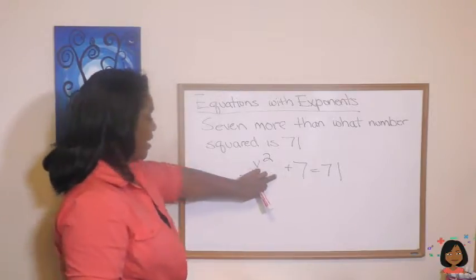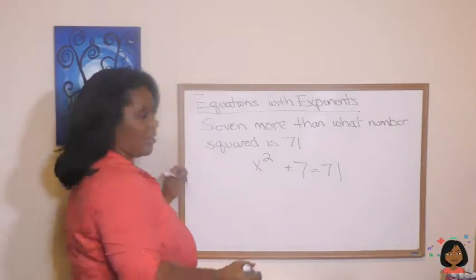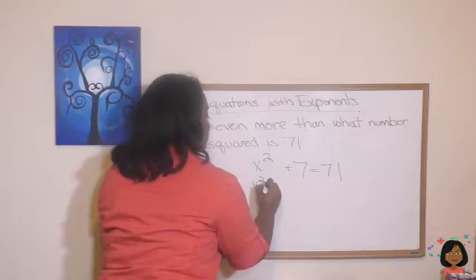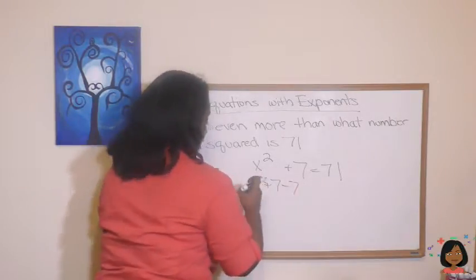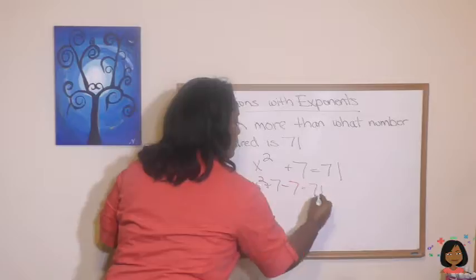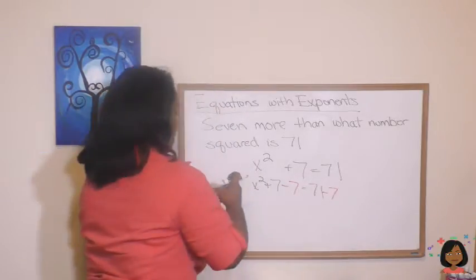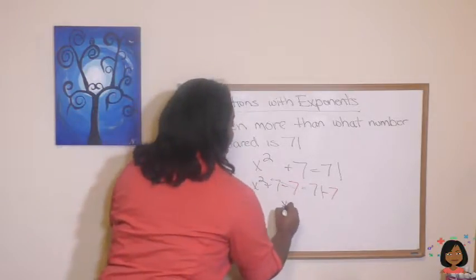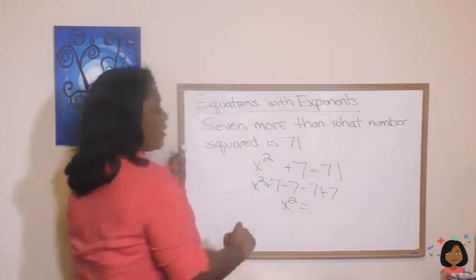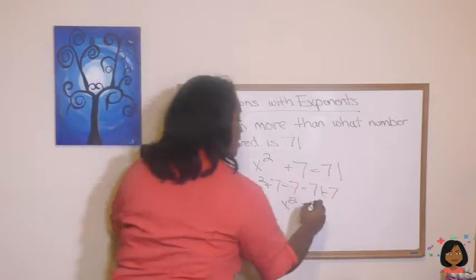Okay, we just learned how to solve this, so let's do it. Let's get rid of that seven by subtracting seven from both sides. Okay, this cancels out, we have an x squared, and this we're left with is a 64.